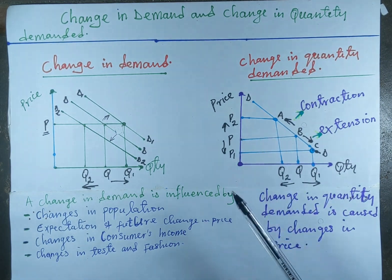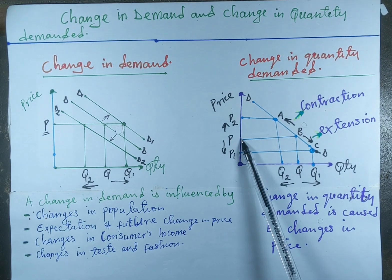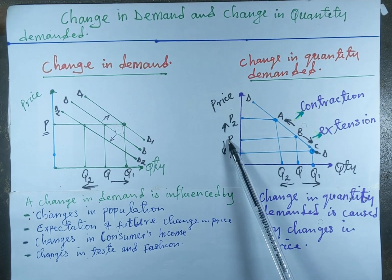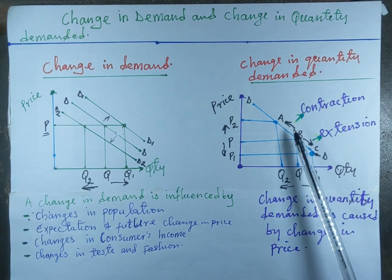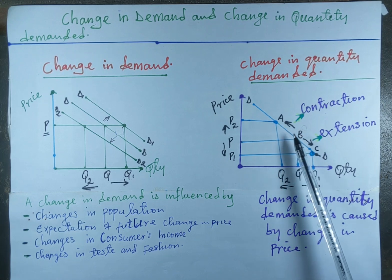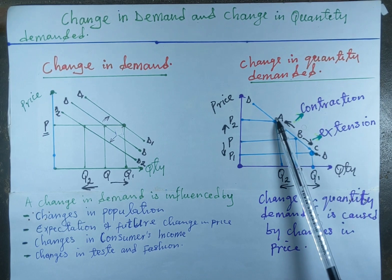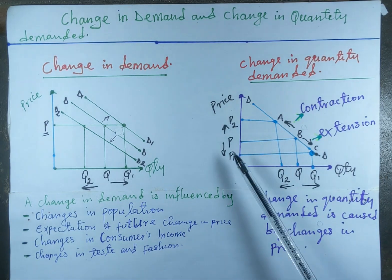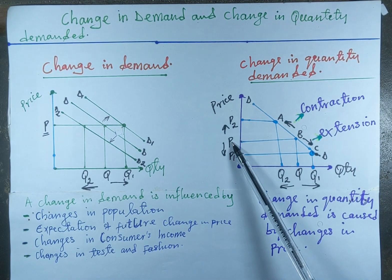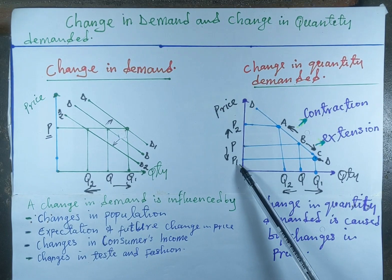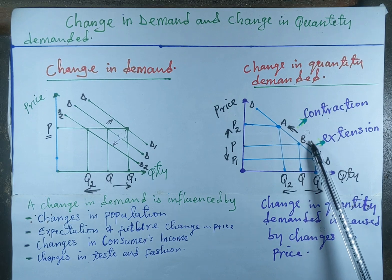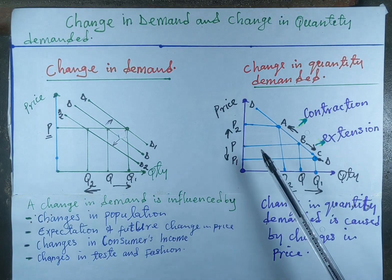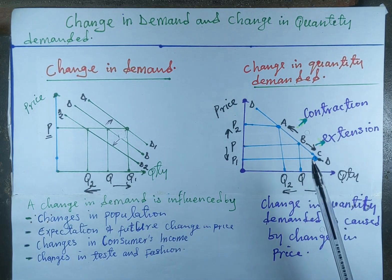Using the graph to explain: when the price increases from P to P2, the quantity demanded falls, which shows a contraction along the demand curve from B to A. Also, when the price falls from P to P1, the quantity demanded increases from Q to Q1, showing an extension along the demand curve from B to C.